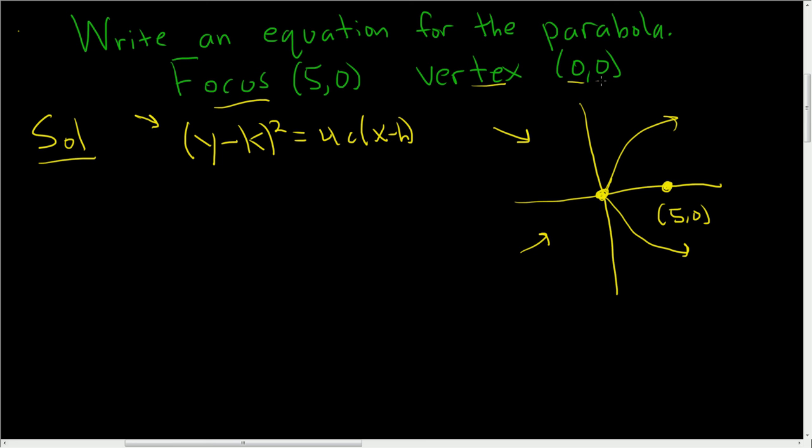Now we can plug in the vertex. This is h, this is k. You get (y-0)² = 4c(x-0). So we end up with y² = 4cx.